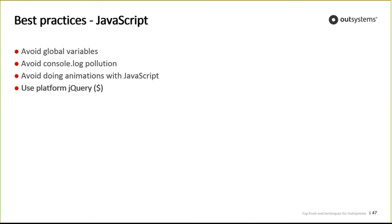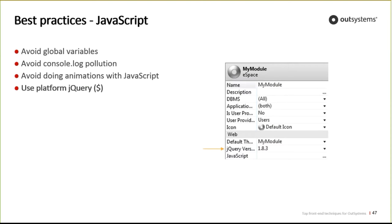The platform already adds jQuery and supports two versions. Avoid including your own version — this typically happens when trying to use a jQuery plugin that requires a more recent version. Since the platform always adds jQuery, adding another means extra download time plus the initialization time of that script. Do not add more jQuery than what the platform already supports.